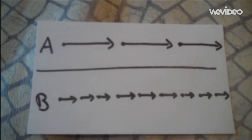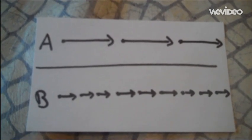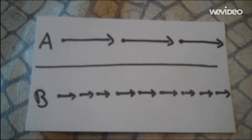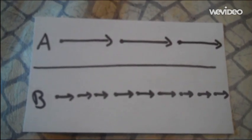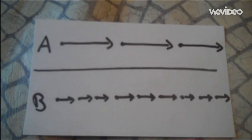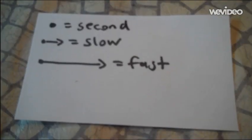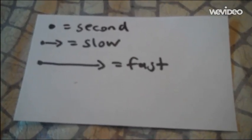That's why for the distance ball A travels in one second, it takes ball B three seconds to travel it. This is shown by the three arrows and dots for ball B per one arrow and dot for ball A. This is an example of the different parts that make up a motion map and how to read them.